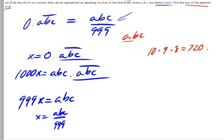One approach is to observe that for every number, say point abc repeating, there is another number. For all x, there exists another number y